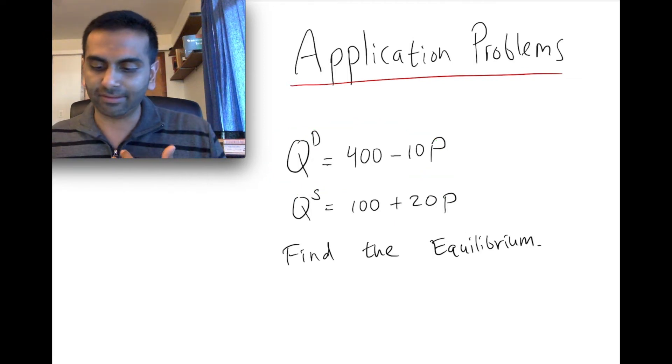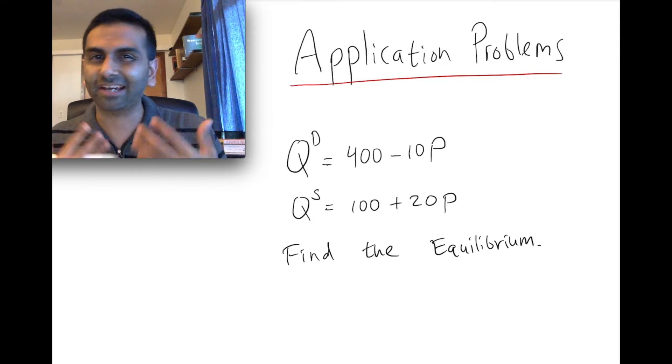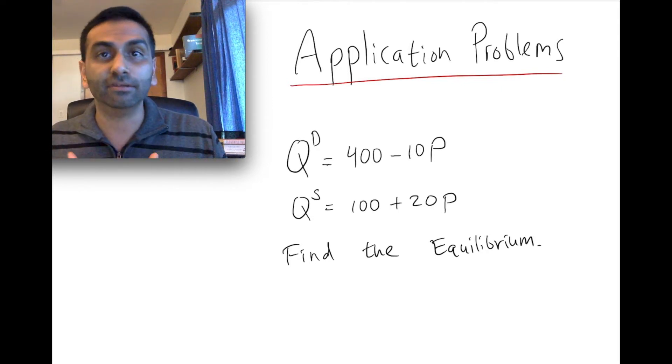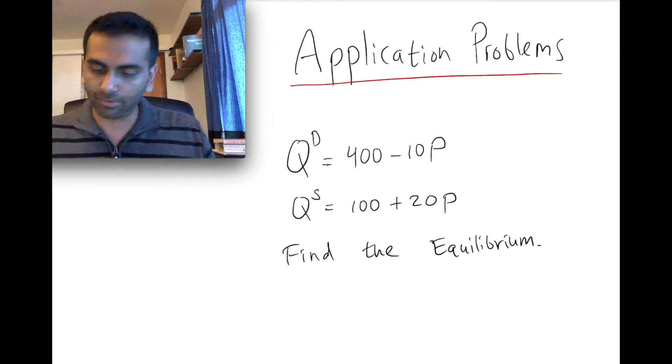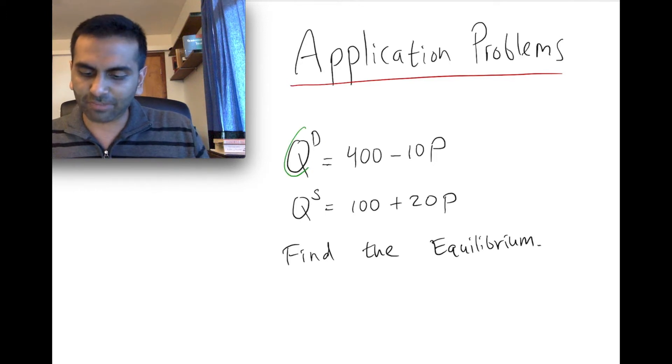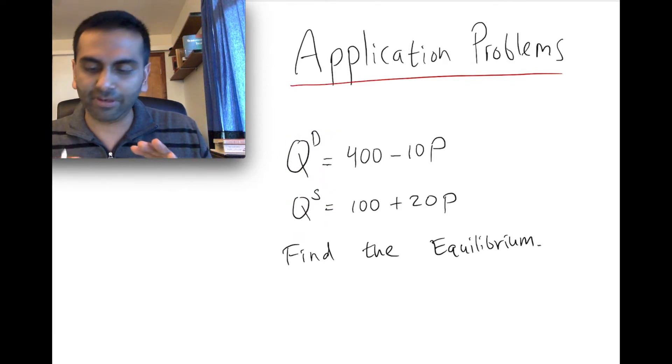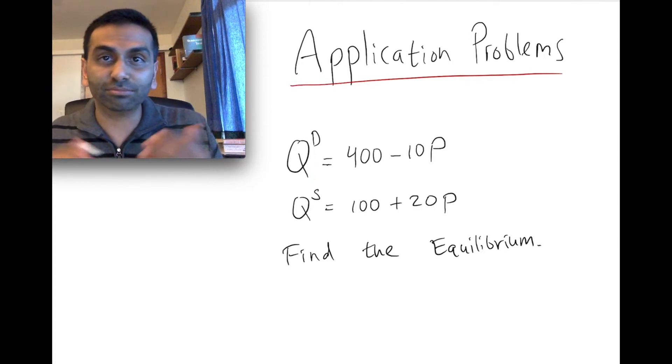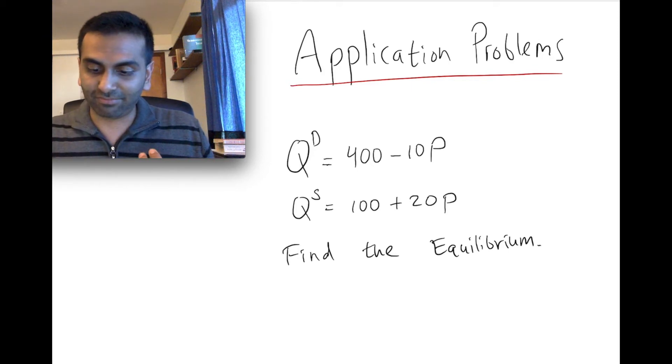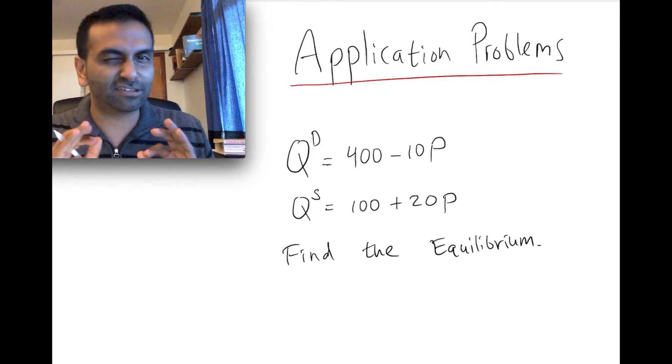This is no different than two equations with an x and a y, and you've got to find using substitution, for example. Here it might look a little funky, especially this notation often, like this looks like q to the power of d or q to the power of s, but this is just notation. Better notation would be if it were a subscript, but often some textbooks have it as a superscript. It's not an exponent.